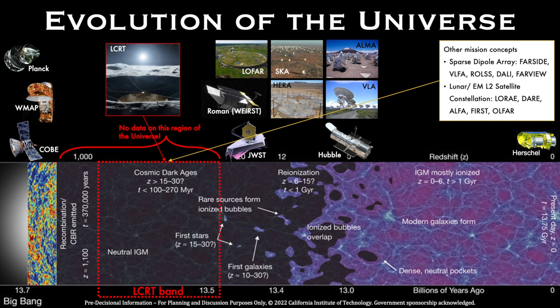Note that there are a number of other mission concepts also under study. These include sparse dipole array concepts like FARSIDE and FarView, and satellite constellations around the moon or at Earth-Moon L2 point like DARE and DAPPER.